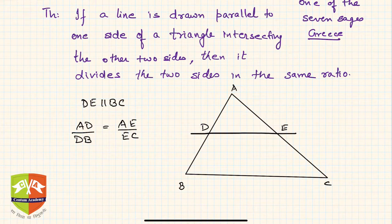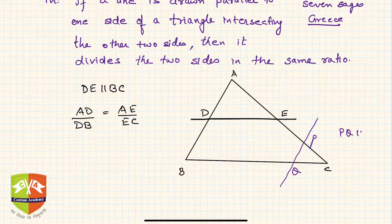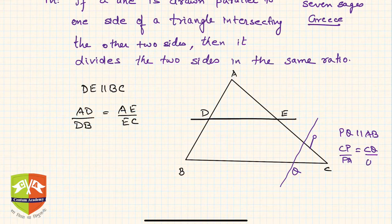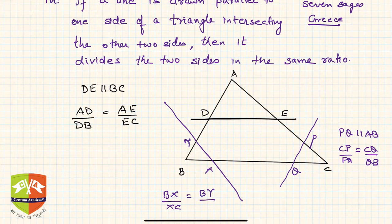It need not only be a line parallel to BC. We can draw another line parallel to AB — let's call it PQ. Then if PQ is parallel to AB, we get CP/PA = CQ/QB. Another example: if we draw a line parallel to AC and call it XY, then BX/XC = BY/YA.